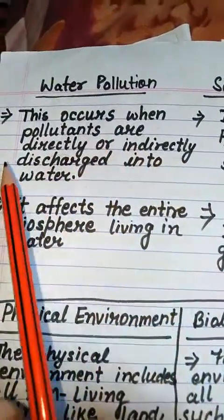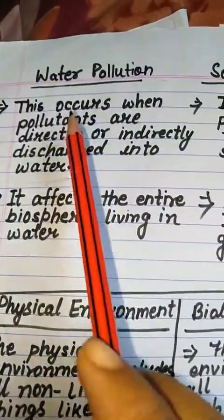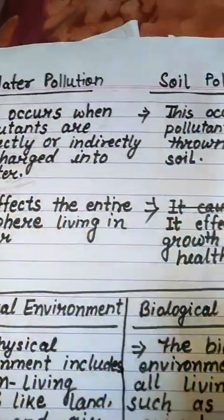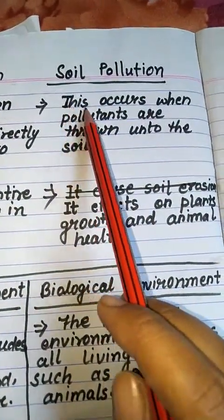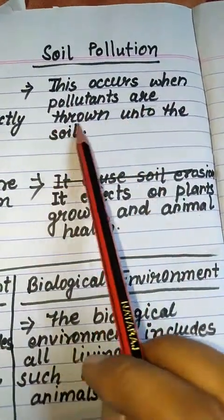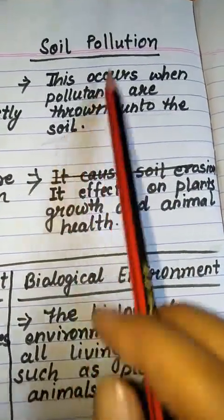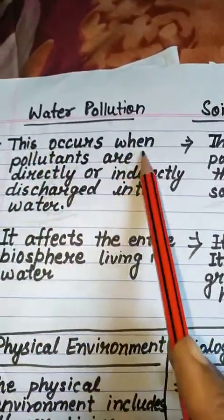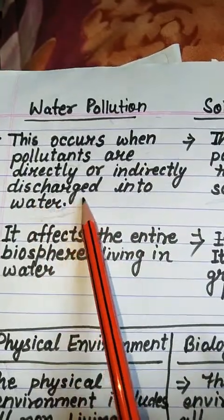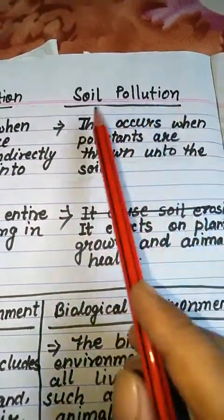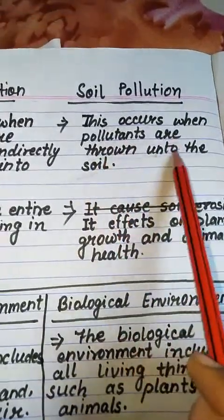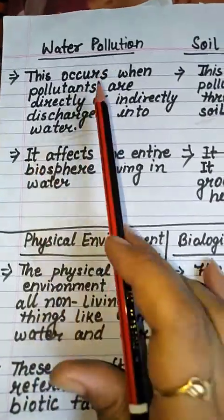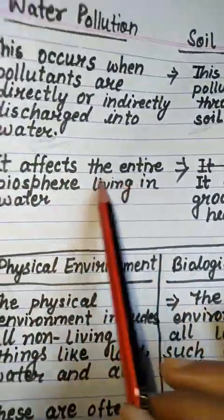Point number one: In water pollution, this occurs when pollutants are directly or indirectly discharged into water. In soil pollution, this occurs when pollutants are thrown onto soil. That is the first point of difference between water pollution and soil pollution.